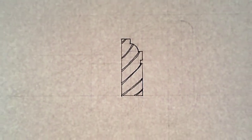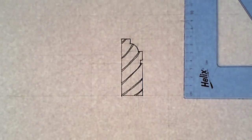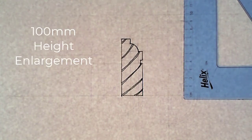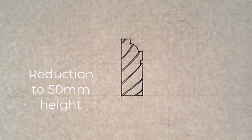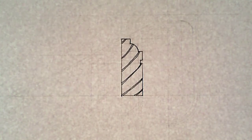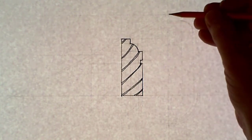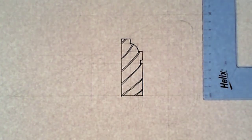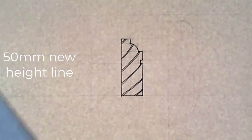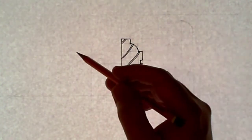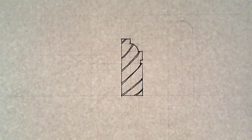I'm going to enlarge that proportionally to 100mm in height, and I'm also going to reduce it to 50mm in height. They'll be proportional — obviously increasing and reducing of the moulding detail. I simply step up from the XY line and draw a light line across to the height of 100mm. I also step up from the XY line and draw a light line across 50mm. Those are going to be the height lines of my two new moulding details.